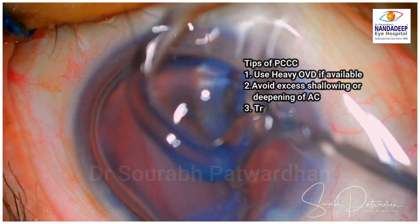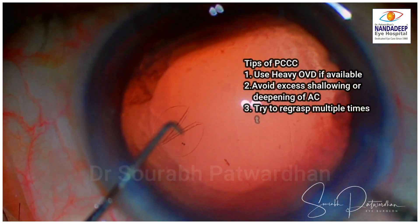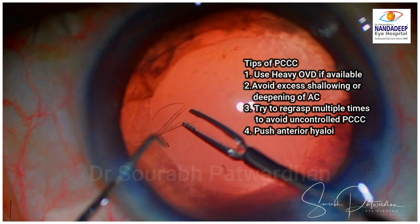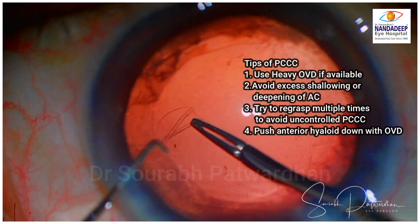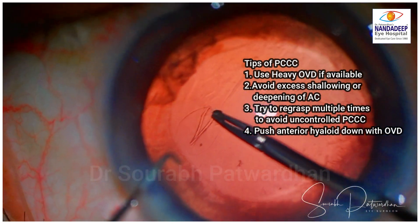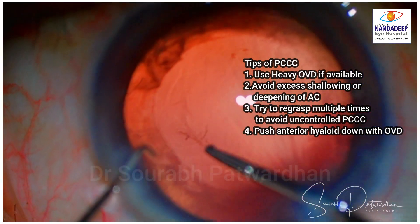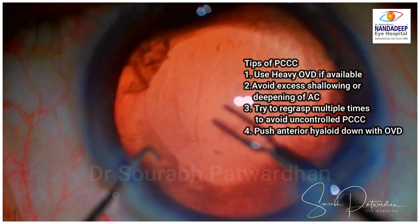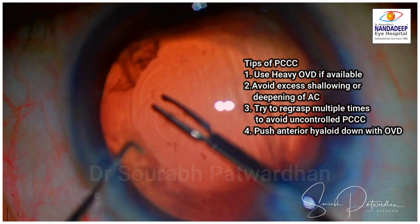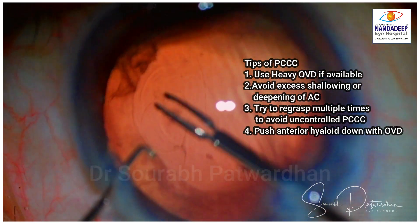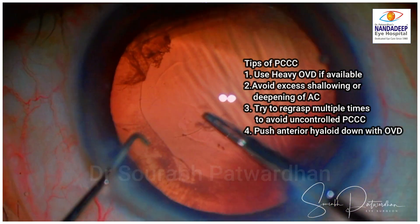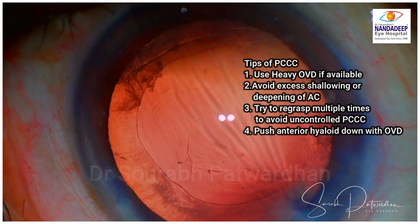I am going to convert it to PCCC. Use heavy OVD if available, avoid excess shallowing or deepening of the anterior chamber, and try to re-grasp the tear multiple times. That avoids uncontrolled PC rupture extension, and push the anterior hyaloid down with OVD if you feel it is bulging up, because you don't want to rupture the anterior hyaloid.